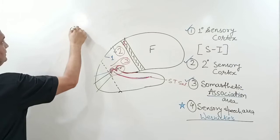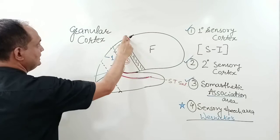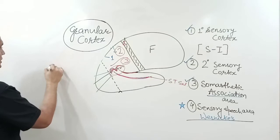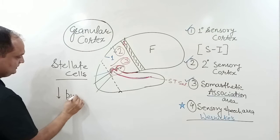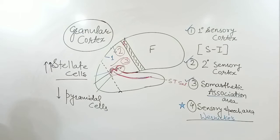The primary sensory cortex is also known as the granular cortex. Recall that the pre-central gyrus (primary motor area) is known as an agranular cortex. The primary sensory cortex is called granular cortex because it contains a large amount of stellate cells and very few pyramidal cells — stellate cells are the most important cells in the primary sensory cortex.